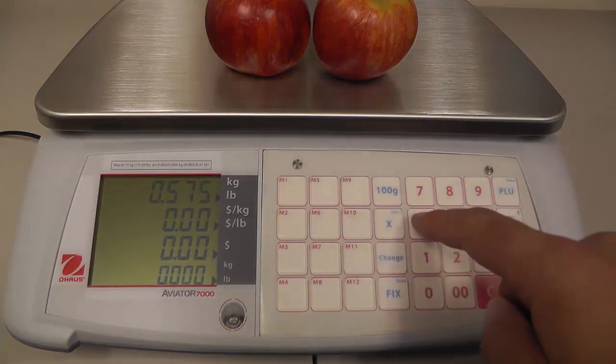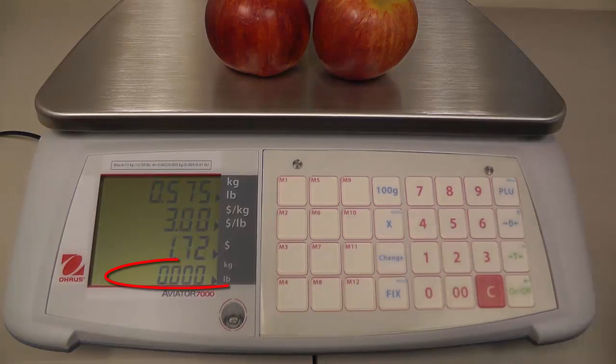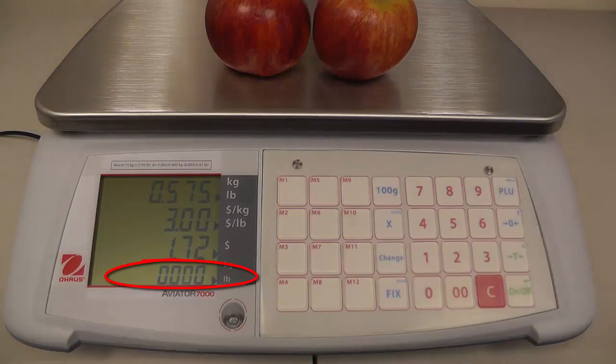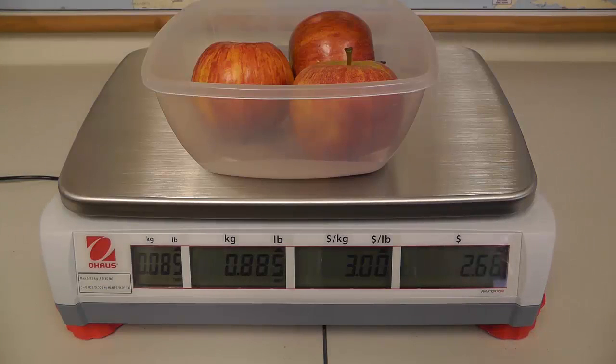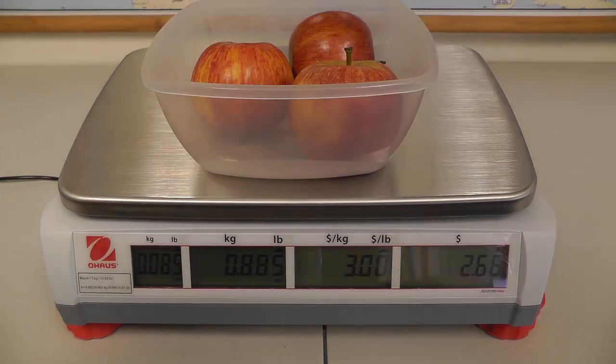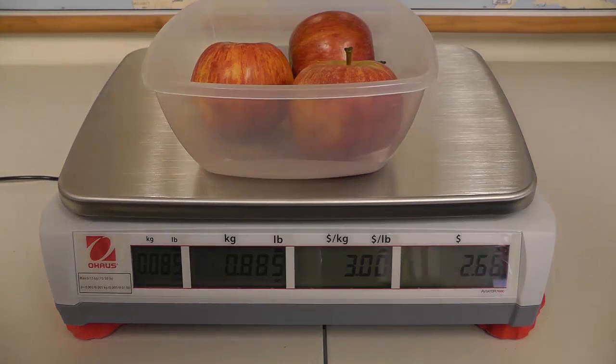The other thing was they added another line to the display to show the tare weight, so now you have four different lines of information on the scale display. I felt like in some instances that's almost like a little bit of information overload, especially when you look at the back of the scale, the customer side, and they've now got four different blocks of information. On one hand it's a positive because it's more information, but I just think it's a little bit overkill sometimes.